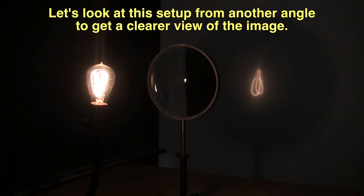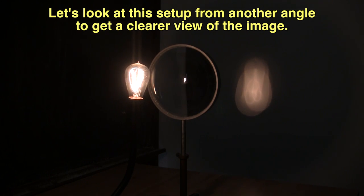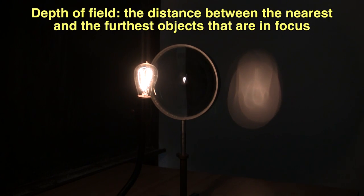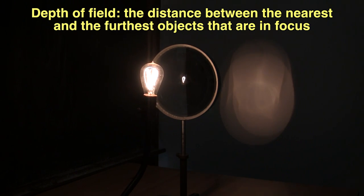If we look at this setup from another angle, we can clearly see the image go in and out of focus as we move the object. The distance over which we can move the object while still obtaining a focused image is called the depth of field.